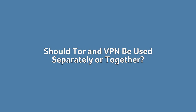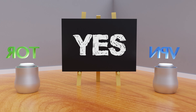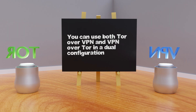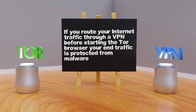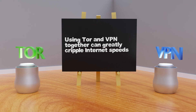Should Tor and VPN be used separately or together? The first question is: can they be? Most definitely yes. You can use Tor over VPN or VPN over Tor in a dual configuration. From a privacy standpoint it's also a more secure arrangement. If you route traffic through a VPN before starting the Tor browser, even with malicious exit nodes your traffic is protected from surveillance or malware. Likewise, downloading a VPN over the Tor network prevents your ISP from tracking your VPN surfing habits. Practically speaking, using them together can greatly cripple internet speeds, as Tor is already slow and adding another layer of network connections slows things further.